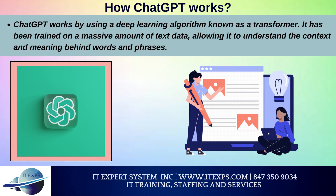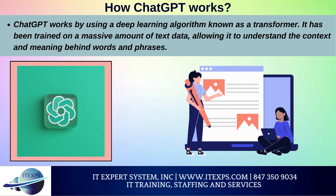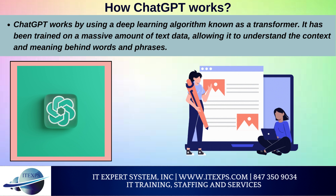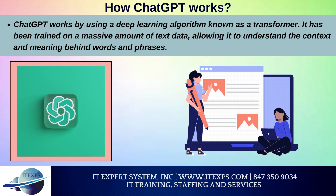How does ChatGPT work? ChatGPT works by using a deep learning algorithm known as a transformer. It has been trained on a massive amount of text data, allowing it to understand the context and meaning behind words and phrases. When a user inputs a prompt or question, ChatGPT processes it and generates a response.